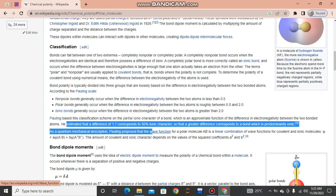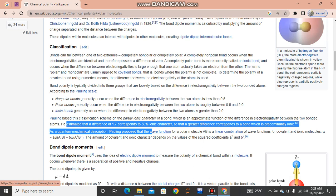As a quantum mechanical description, Pauling proposed that the wave function for a polar molecule AB is a linear combination of wave functions for covalent and ionic molecules. The amount of covalent and ionic character depends on the values of the squared coefficients a² and b².